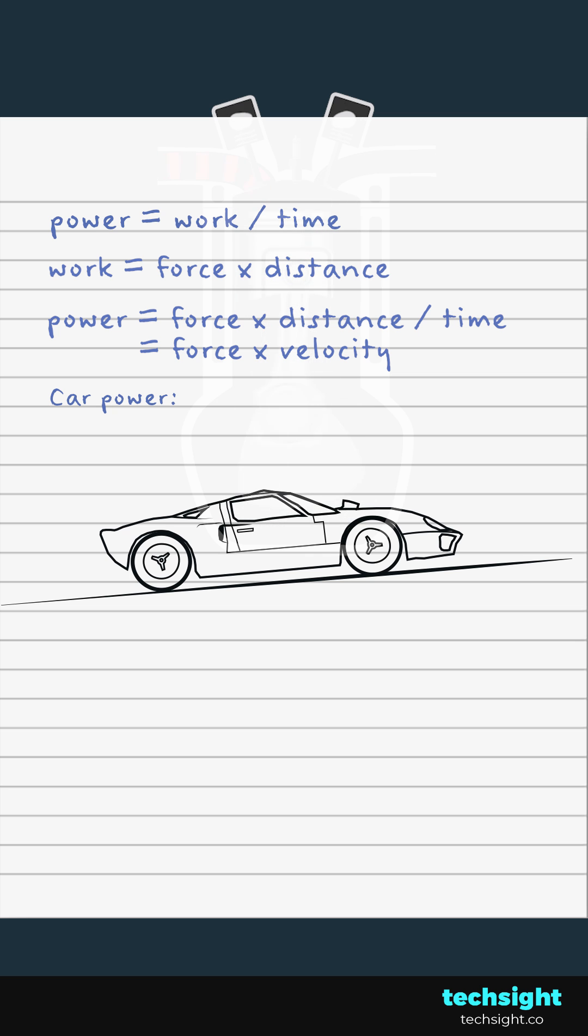So we know how much power a car needs if we know how fast it's going and the driving force needed to push it along. At constant velocity, the driving force needs to equal the sum of the resistive forces.